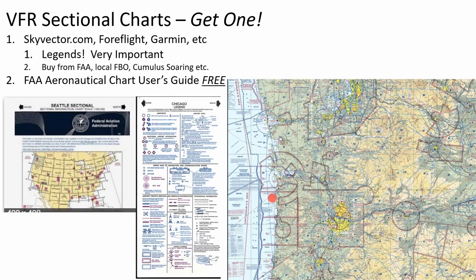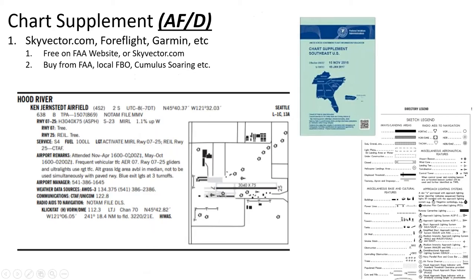Chart supplement — every airport has one. It used to be called the AFD, or Airport and Field Directory, and many places still call it that including ForeFlight. Now it's called the chart supplement. You can pull it up on SkyVector, ForeFlight, or Garmin. You can see it for free on the FAA website or buy it from the FAA, your local FBO, or Cumulus Soaring. Here's ours: Hood River Ken Jernstead Airfield. For Sierra 2, we're two miles south of the city, eight hours ahead of Greenwich time.